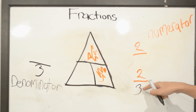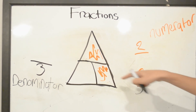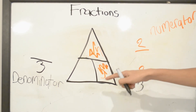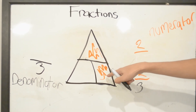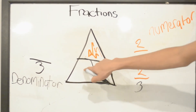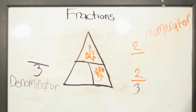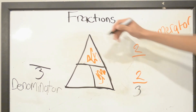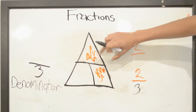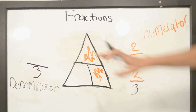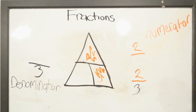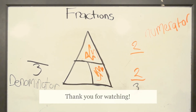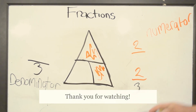The denominator is 3 because there are 3 parts: 1, 2, 3. Our numerator is 2 because there are 2 shaded parts: 1, 2. This is how you write fractions. Thank you.